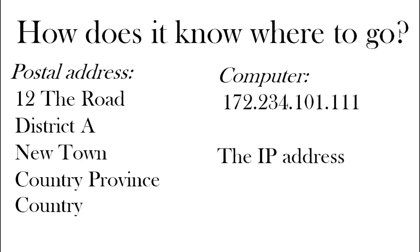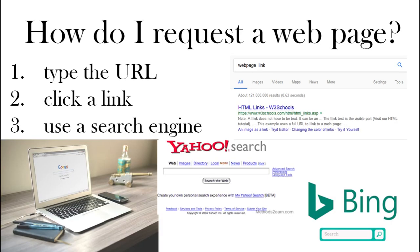How does it know where to go? You can send a letter using a postal address, and a computer does something similar but uses the IP address. To request a web page, you can type in the web address — the URL — or on web pages there are links you can click to go to another document, or you can use a search engine.